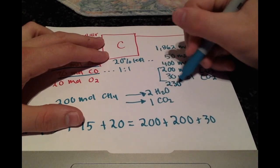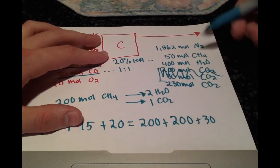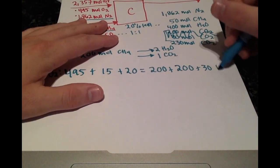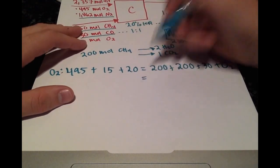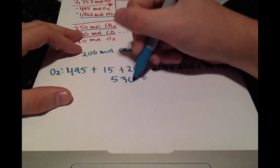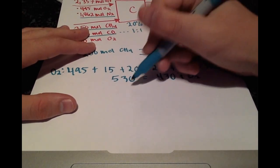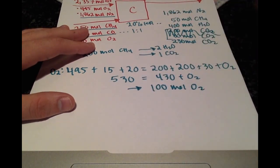We could have just rewritten this as 230 moles of CO2 plus the O2 left over. So that simplifies to 530 equals 430 plus O2. The amount of O2 we must have is 100 moles of O2.